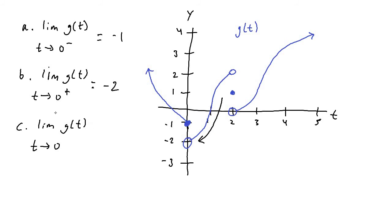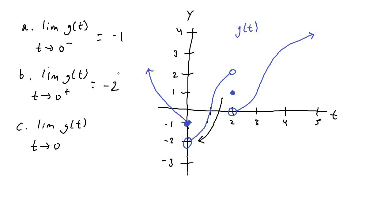For the actual limit as t approaches zero: in order for the limit to exist, the limit from the left-hand side must equal the limit from the right-hand side. The left-hand limit is negative one and the right-hand limit is negative two. Since they are different, the limit as t approaches zero of g of t does not exist.